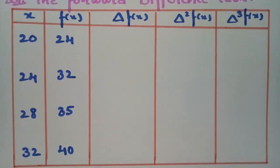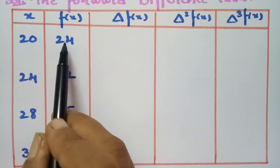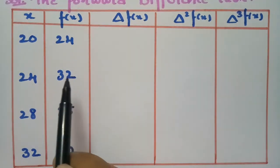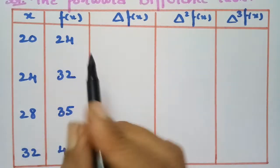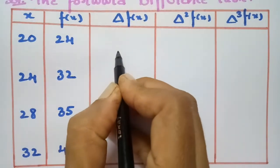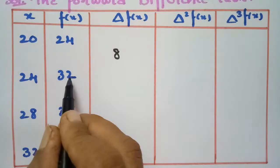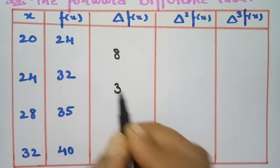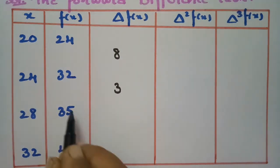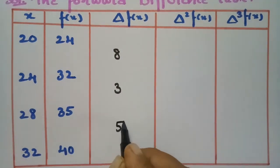To make the difference table, we subtract consecutive y values: 32 minus 24 is 8, 35 minus 32 is 3, and 40 minus 35 is 5.